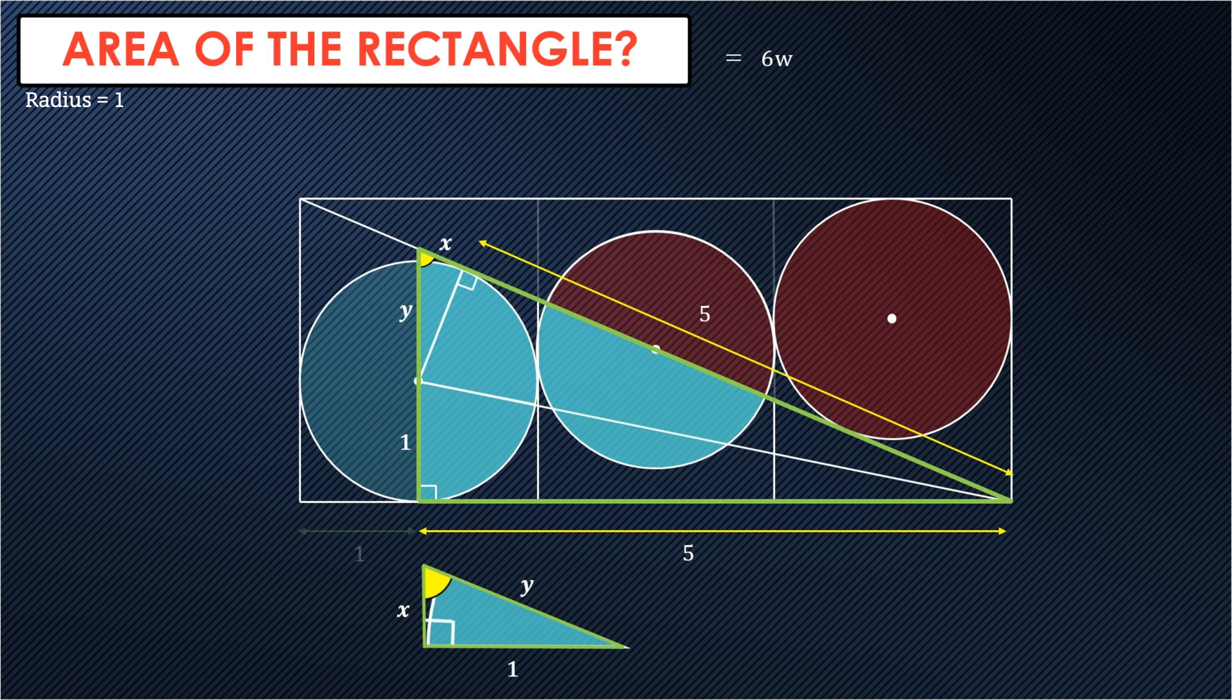If we look at the base of both triangles, so the small triangle at the bottom has a base of one. The larger green triangle has a base of five. That means that the ratio of the lengths is one to five.